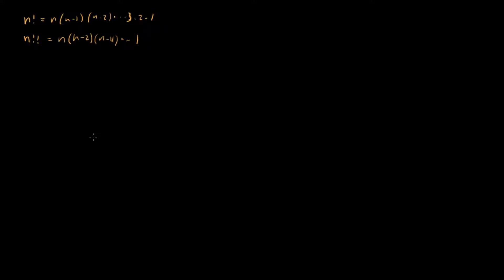So an example of this would be 9 double factorial. 9 double factorial is equal to 9 times 7 times 5 times 3 times 1. So 9 double factorial is just taking the number 9 and multiplying every odd number less than it together.